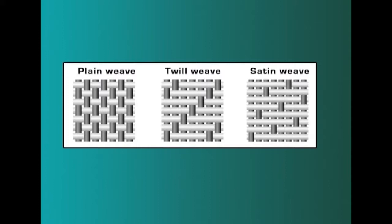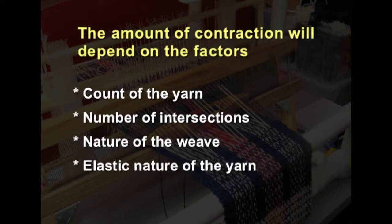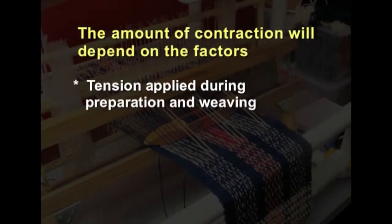Plain weave, for example, has the maximum number of interlacements, so there will be higher contraction of warp and weft. Whereas in twill weave or satin weave, the interlacements are very few, so the contraction will be very less compared to plain weave. The elastic nature of the yarn also matters — if it is elastic, while putting tension on the loom and during weaving it will elongate, but once the fabric reaches the consumer there will be a lot of shrinkage. So the elastic nature of the yarn should be taken into consideration, as well as the tension applied during preparation and weaving.